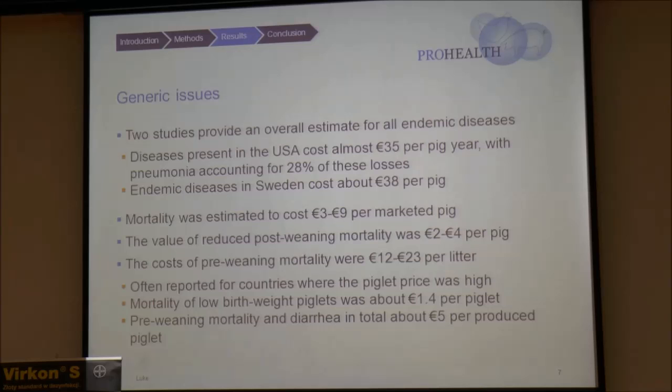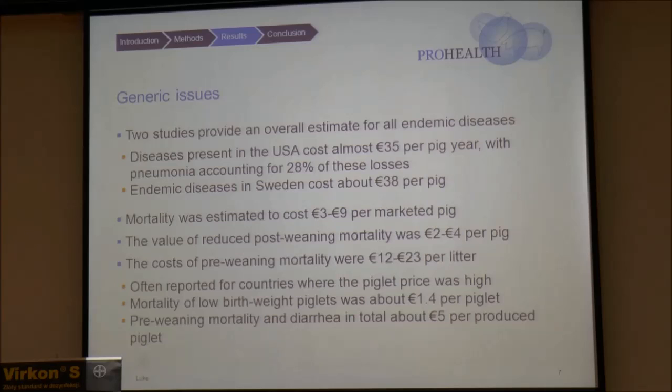If you think about studies estimating the cost of all production diseases, there are not really studies that give a good overview. But there are a couple of studies focusing on endemic diseases, which is not exactly the same as production diseases. They suggest that the cost of endemic diseases would be somewhere in the range of 30 to 40 euros per pig. For instance, there is one American study reporting 35 euros per pig per year, with pneumonia accounting for about one-third of costs at that time.